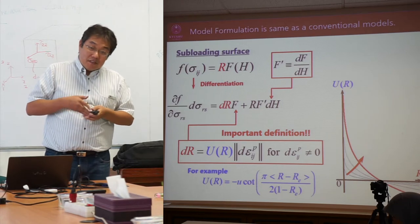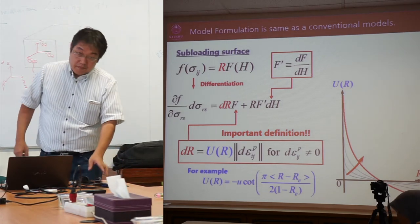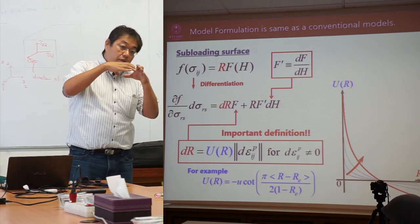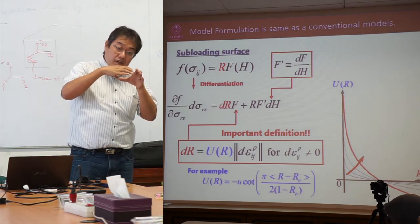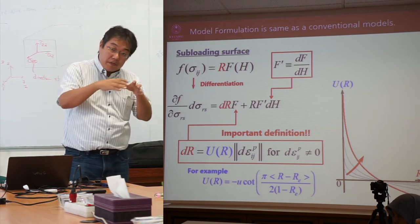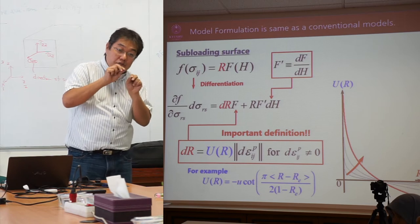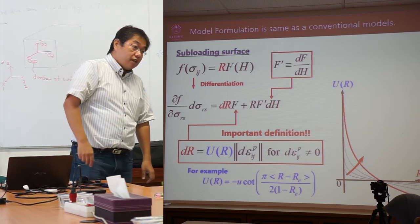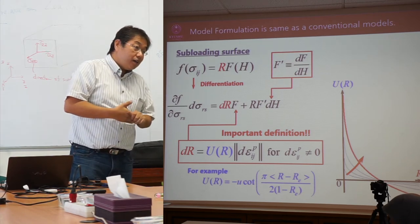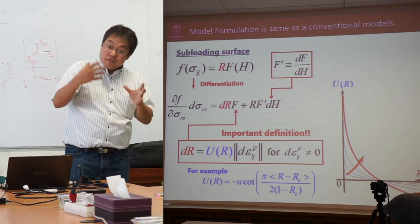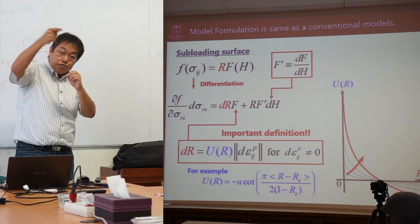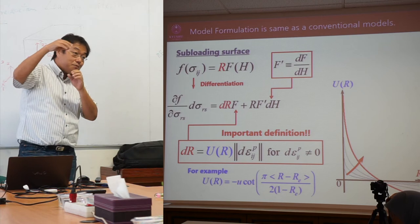When the loading surface approaches the yield surface, plastic deformation occurs. When plastic deformation occurs, the inner surface should approach the yield surface. But the material becomes weaker and weaker. If plastic deformation occurs, the inner surface shrinks, so the ratio r becomes small.